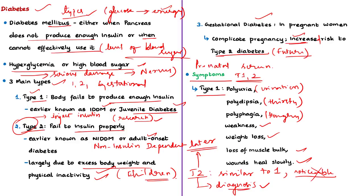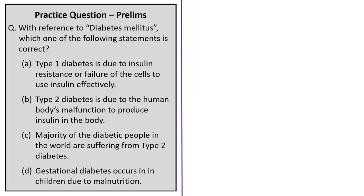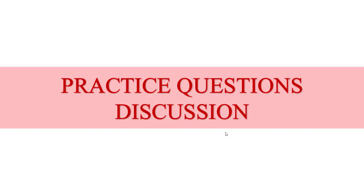To summarize this news article, we discussed the International Diabetes Federation and the IDF Diabetes Atlas report, the National Family Health Survey highlights, Type 1 and Type 2 diabetes including gestational diabetes, and their symptoms — all important aspects for exam preparation.